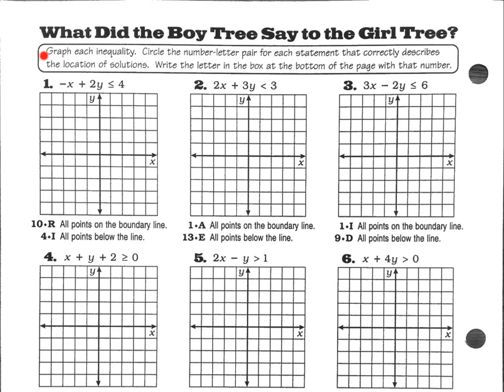It says to graph each inequality, that's what we've been doing, and then it says circle the number letter pair for each statement that correctly describes the location of solutions. That's the part that's a little weird. And then write that in the box at the bottom.